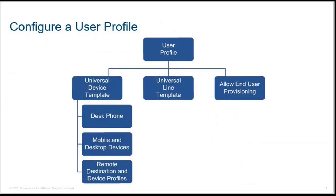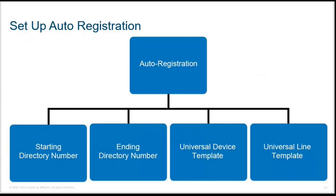To configure a user profile, you have to configure a universal device template — which can be a desk phone, mobile and desk phone devices, remote destination, or device profile. You also configure a line template and allow end user provisioning by making sure auto registration is enabled. In auto registration, configure the start DN and end DN, for example 1001 to 1010. The universal device template and universal line template must be configured and associated. Provide the start DN, end DN, device template, and line template.